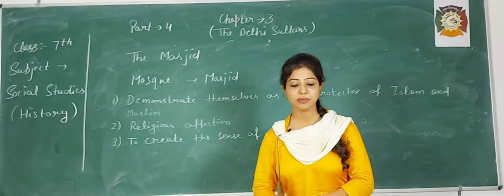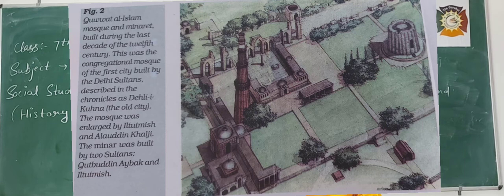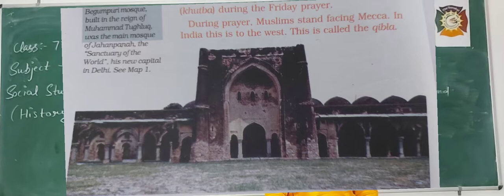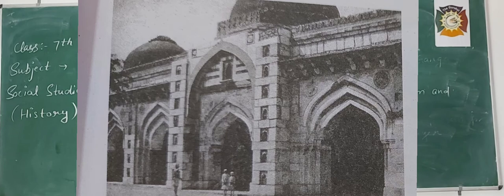Now we will see pictures of these mosques. First is Quwwat-ul-Islam, which was enlarged by Iltutmish and Alauddin Khilji. The minar was built by two sultans: Qutbuddin Aibak and Iltutmish. The second mosque is Begumpuri Mosque, built in the reign of Muhammad Tughlaq, the main mosque of Jahanpanah. Third is Motki Masjid, built in the reign of Sikandar Lodi by his minister. The fourth is Mosque of Jamali Kamali, built in the 1520s.